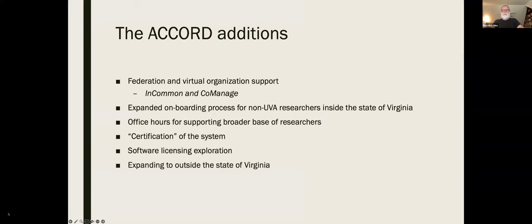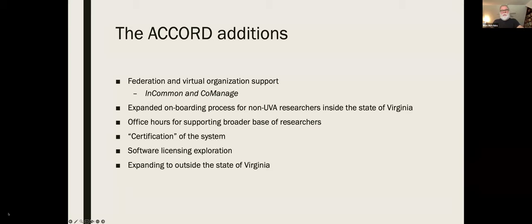In talking to other folks in Virginia, we found it wasn't just UVA Wise having problems with not having a place to put protected data — some of the other smaller schools had the same issue. That motivated us to start looking at how we could expand the system we had built at University of Virginia to allow other schools to come in. And so we started looking at a few additions to our system. This is where the NSF award came in — we received an NSF MRI award through UVA Wise to augment UVA systems to allow other universities to join.